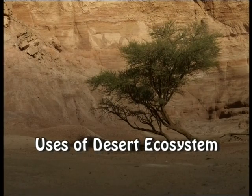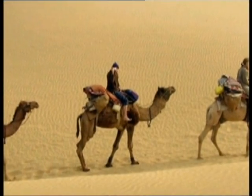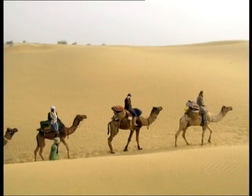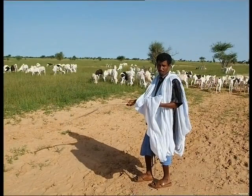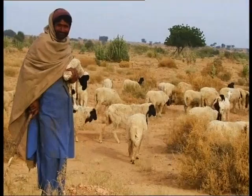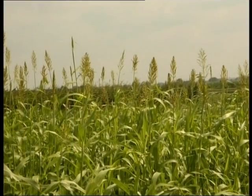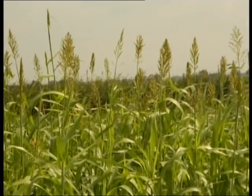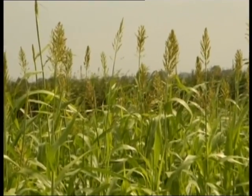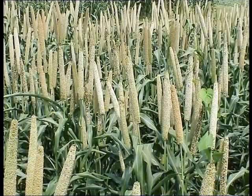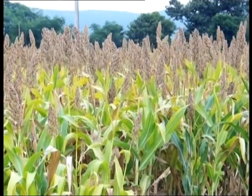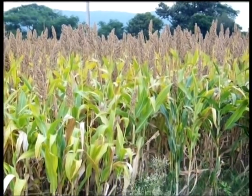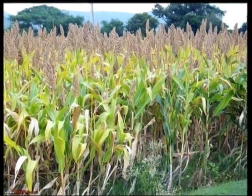Uses of the desert ecosystem: areas of scarce vegetation with semi-arid scrubland are used for browsing by camel and grazing by goat and sheep in Gujarat and Rajasthan. Areas with little moisture are used for growing crops like sorghum (jowar) and pearl millet (bajra). The natural grasses and local crop varieties adapted to low moisture conditions can be used for genetic engineering and dry farming.